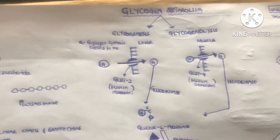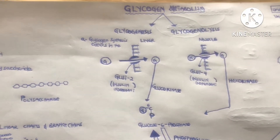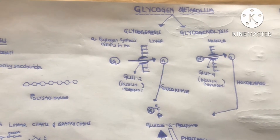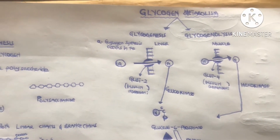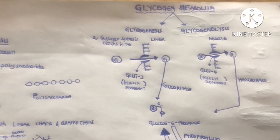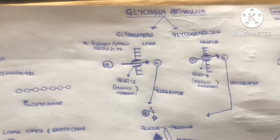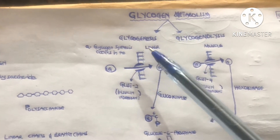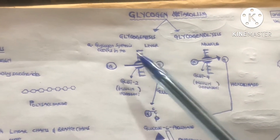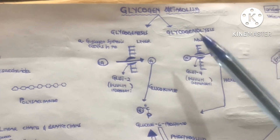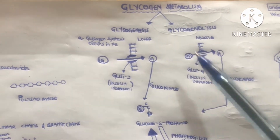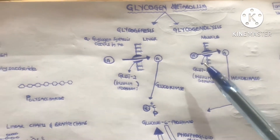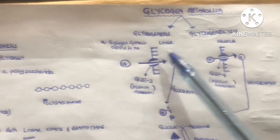Hello, friends. Today we're going to look at the topic called glycogen metabolism. It is divided into two parts: glycogenesis, which is the formation of glycogen, and glycogenolysis, which is the breakdown of glycogen to get glucose. Let's start with glycogenesis.